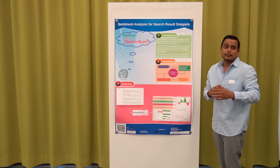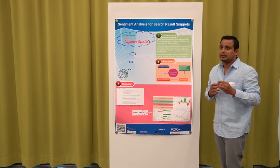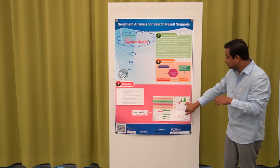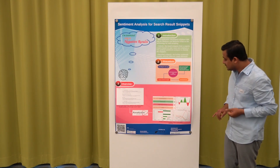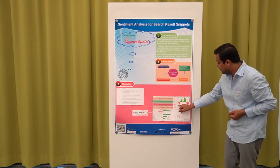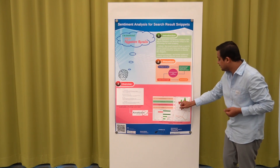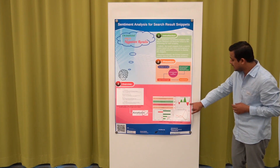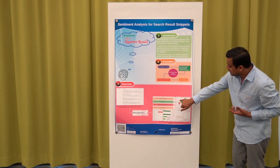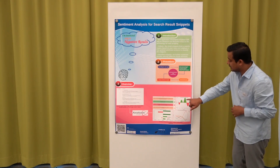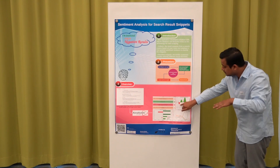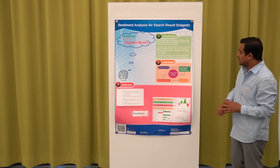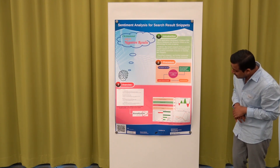We have five levels of classification, so we can classify snippets into five levels. We can also do further analysis — for example, looking at the trend of sentiment across a search result page. If we have eight search results on one page, we can see how the sentiment trend is flowing, whether it's going downwards towards negative or upwards towards positive.